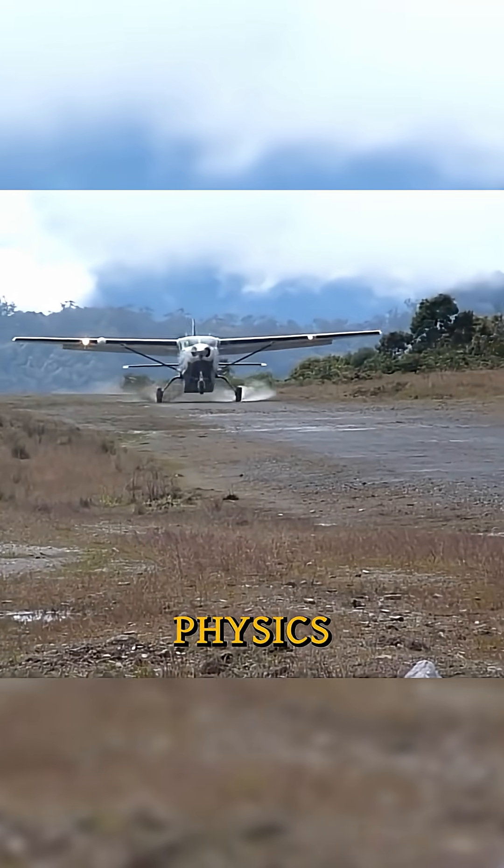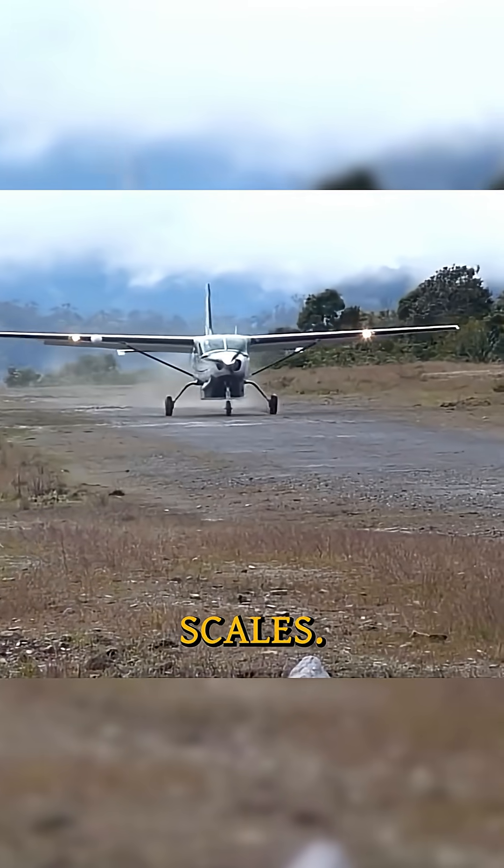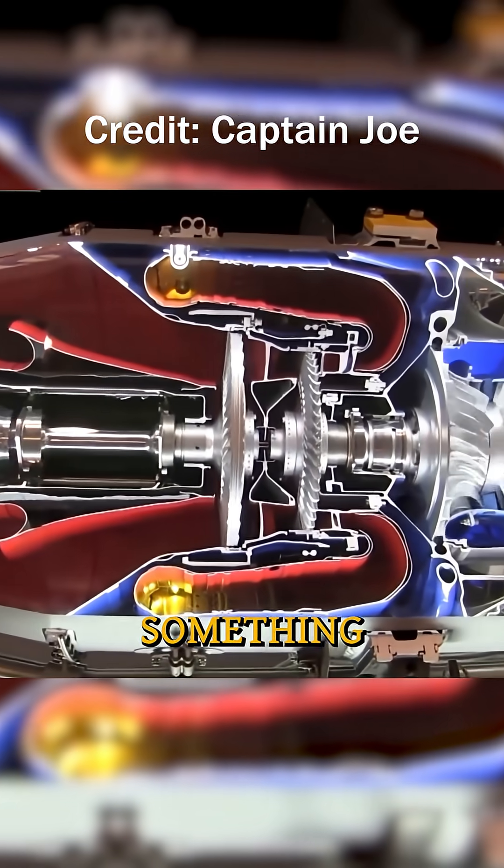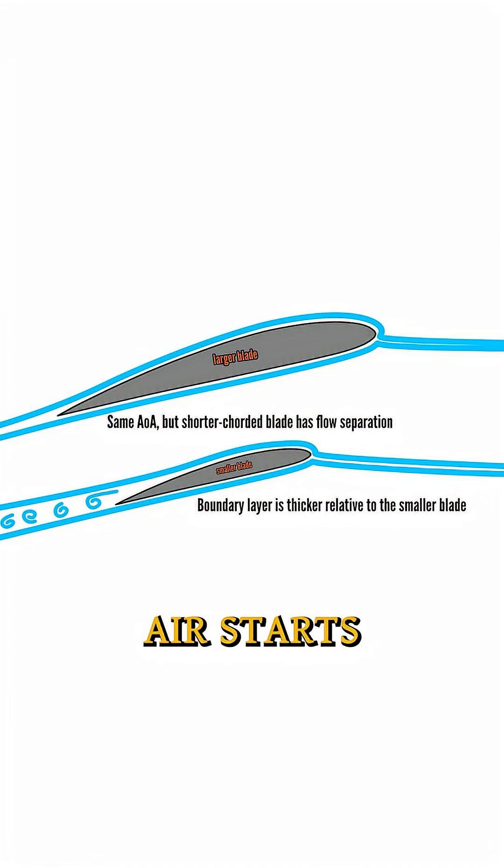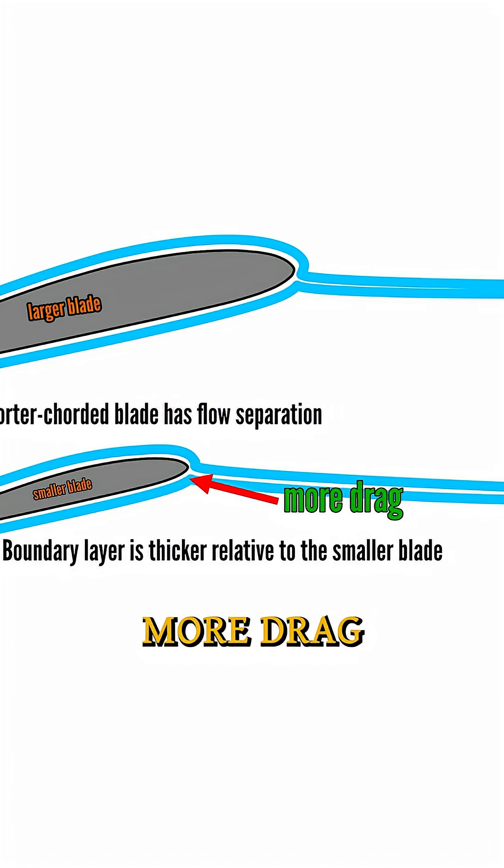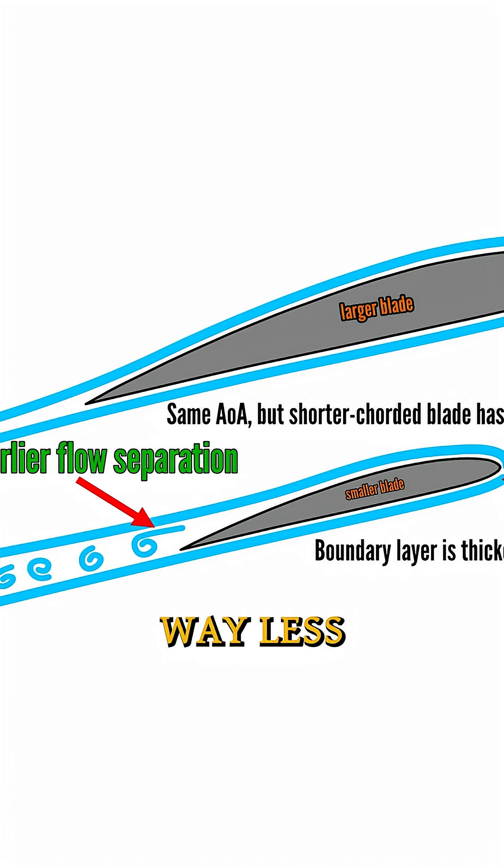Problem 2: Physics gets weird at small scales. Those tiny compressor blades create something called a low Reynolds number. Basically, air starts acting thicker and stickier around small objects. This creates more drag and makes the blades way less efficient.